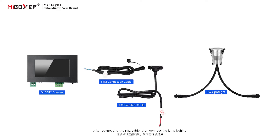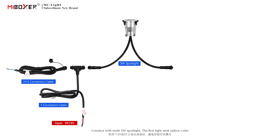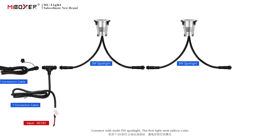After connecting the M12 cable, connect the lamp behind. Input voltage must be the same as the voltage of the lights. For example, the DMX512 3-watt spotlight has an input voltage of DC 12 volts. Connect it with multiple 3-watt spotlights.